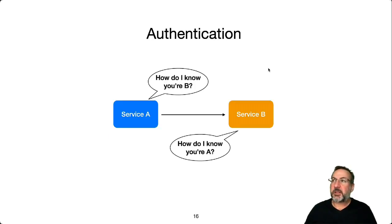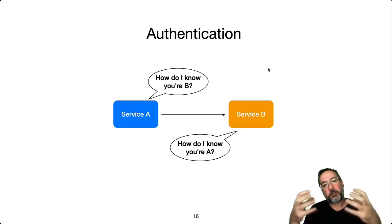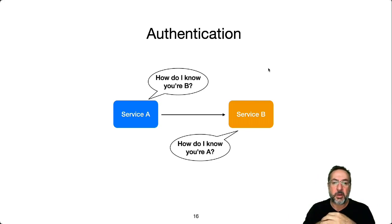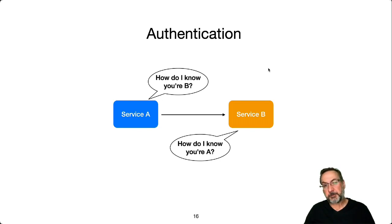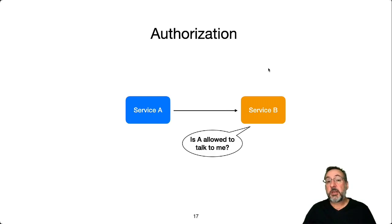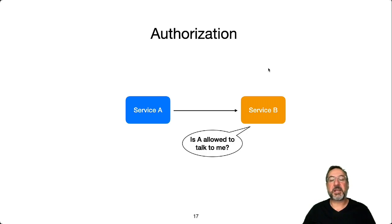The next problem is absent in the monolith: when two pieces of logic are separated and one calls the other over the network, there's the matter of identity — not the end user's identity, but the workload's identity. How does Service B know that Service A is calling it and can trust it? There's a security concern increasingly mandated by regulation. On top of authentication is authorization: if we have the identity of the caller, are they allowed to call us? Do we embed those rules and add yet another dependency in our application to deal with this?